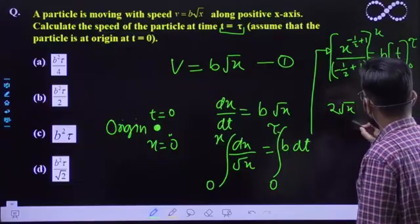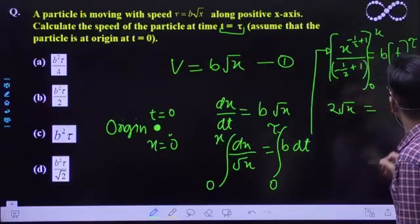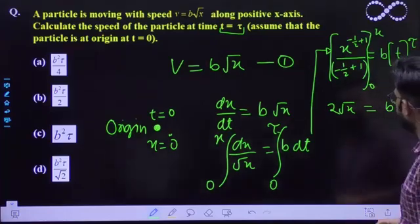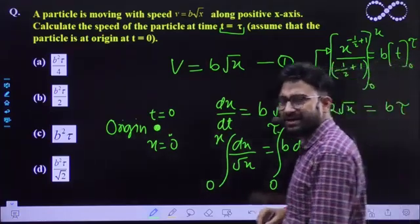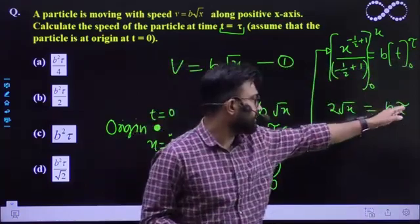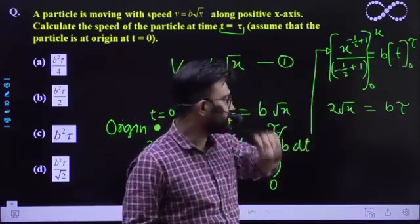Aur yeh ho jayega half to open mein 2 aajayega. So x, x yeh aajayega. Then you'll be getting b into tau ke berabar ho jayega. So this is expression for x and tau time. T time pe displacement ka expression yeh aagaya. Thik hai.